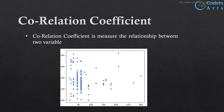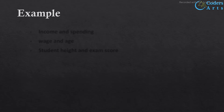If the correlation coefficient of two variables is zero, then there is no relationship between the two variables. As you can see in the scatter plot, there is no relationship between the two variables. Let's see some other examples.